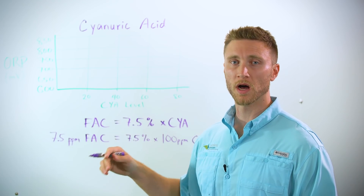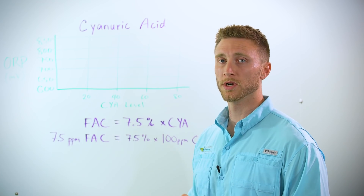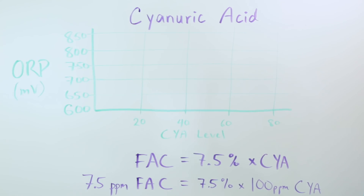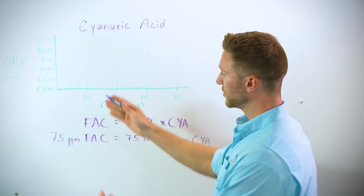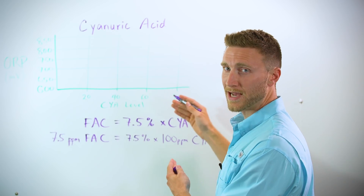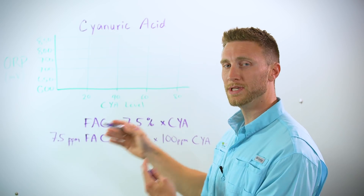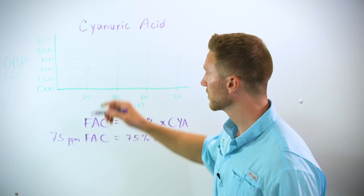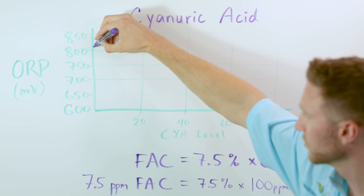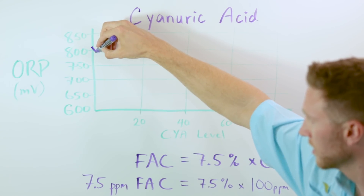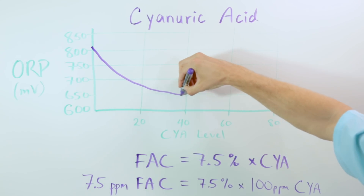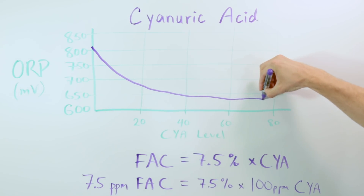This chart represents oxidation reduction potential, known as ORP, in millivolts versus cyanuric acid level. As you increase the level of cyanuric acid, you decrease the level of ORP. Adding more cyanuric dramatically lowers it, and it starts to stabilize out at higher levels.